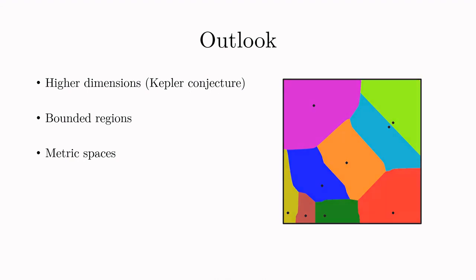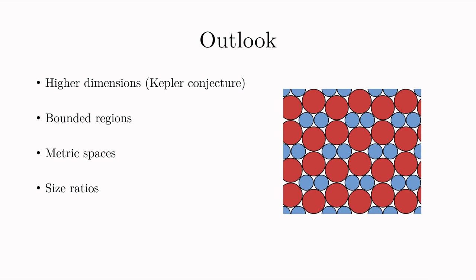As yet another variation, you could experiment with different size ratios. This means that the circles could be of different sizes and this again changes the structure of optimal solutions greatly.